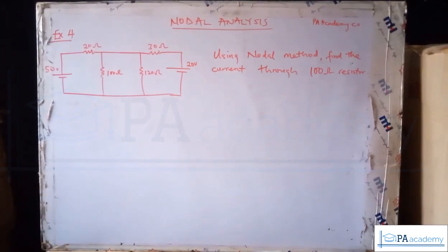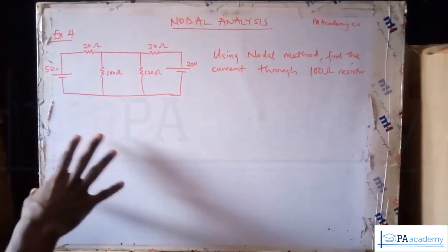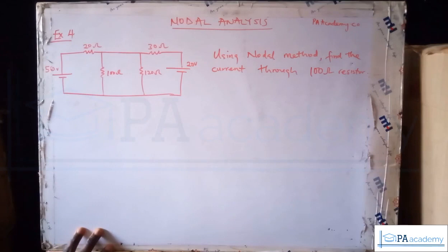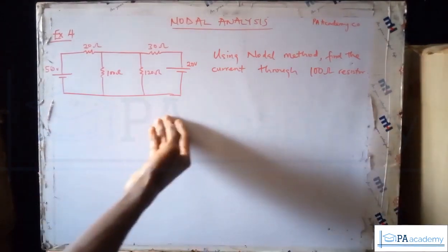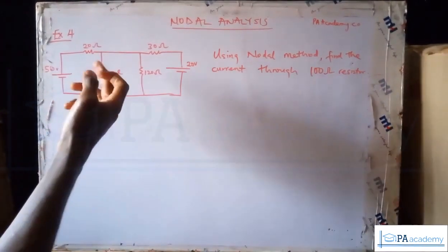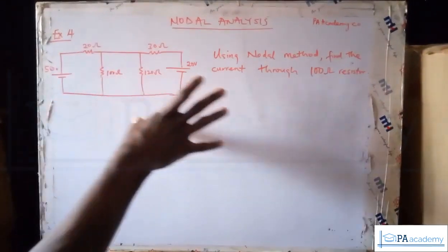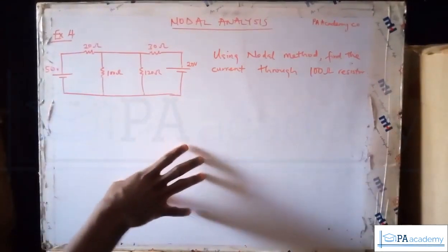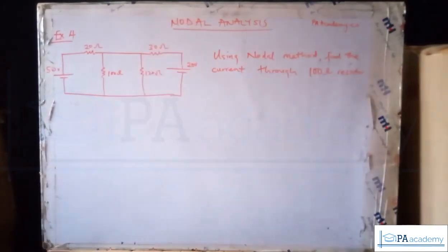You have to be familiar with all of them — the node, the super node, the mesh, the Thevenin and every other method — because you never can tell which one the question will ask for. This question says: using nodal method, find the current through the 100 ohm resistor. There are other methods you could use, but this question wants us to use nodal analysis.